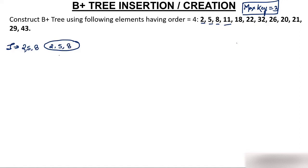Now I have to insert 11. Is it possible? No, because a node cannot have more than 3 keys. So I'll explain a new concept: left bias and right bias. If 11 were to come, it would come at the end since it's greater. Now there is no exact middle — you can either take the second or third element as middle. If you take the second element as middle, the tree is called left biased. If you take the third element (8), it is called right biased.